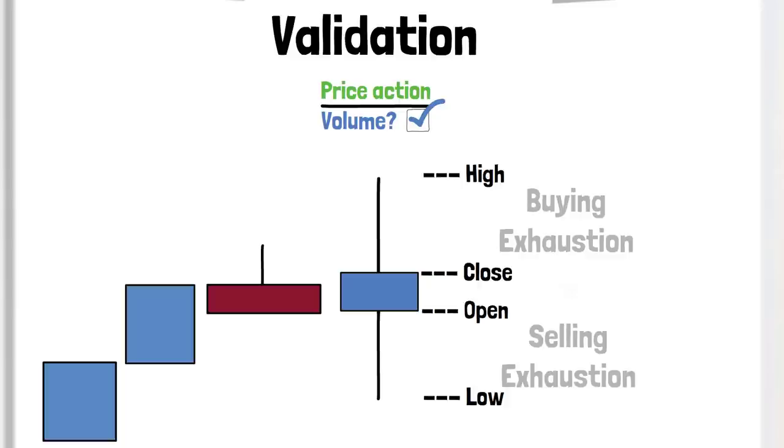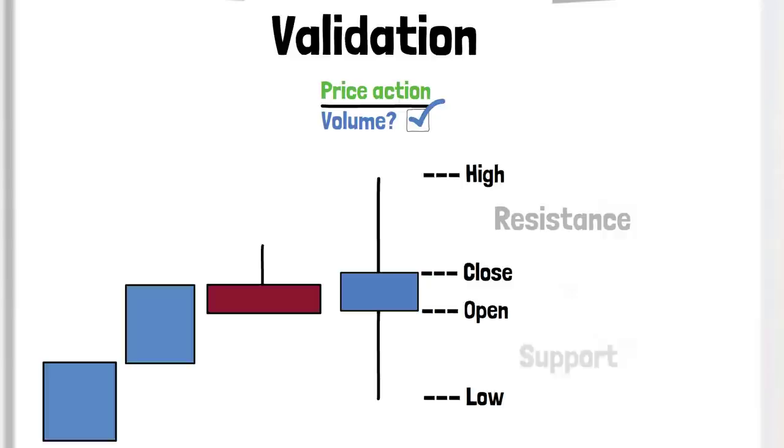Equally, these price battles can be interpreted as areas of support or resistance, or as per our previous theory, a demand or supply zone. Either way, they provide important clues on where price could move next. This candle would be seen as a candle of indecision, and would perhaps be better left alone.